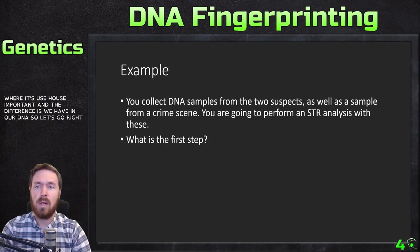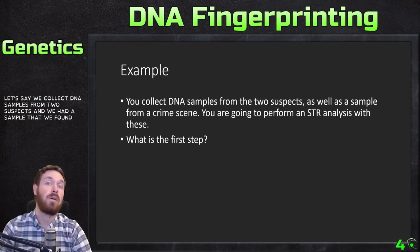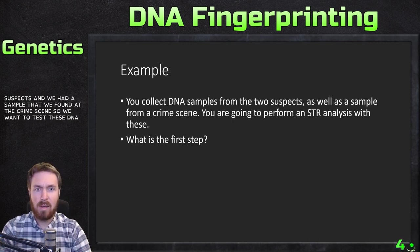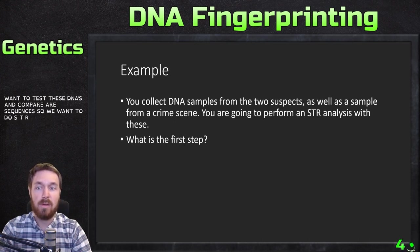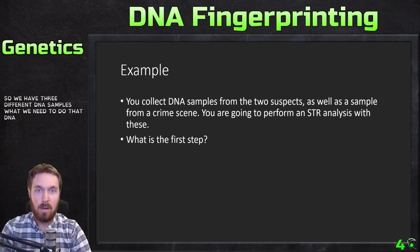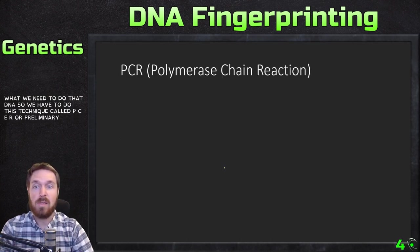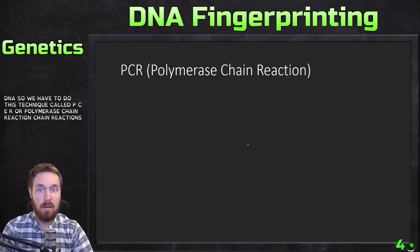Let's go into an example. Say we collect DNA samples from two suspects and we have a sample found at the crime scene. We want to test these DNAs and compare their sequences using STR analysis. The first step with three different DNA samples is a technique called PCR, or polymerase chain reaction — a very common technique in biotechnology.